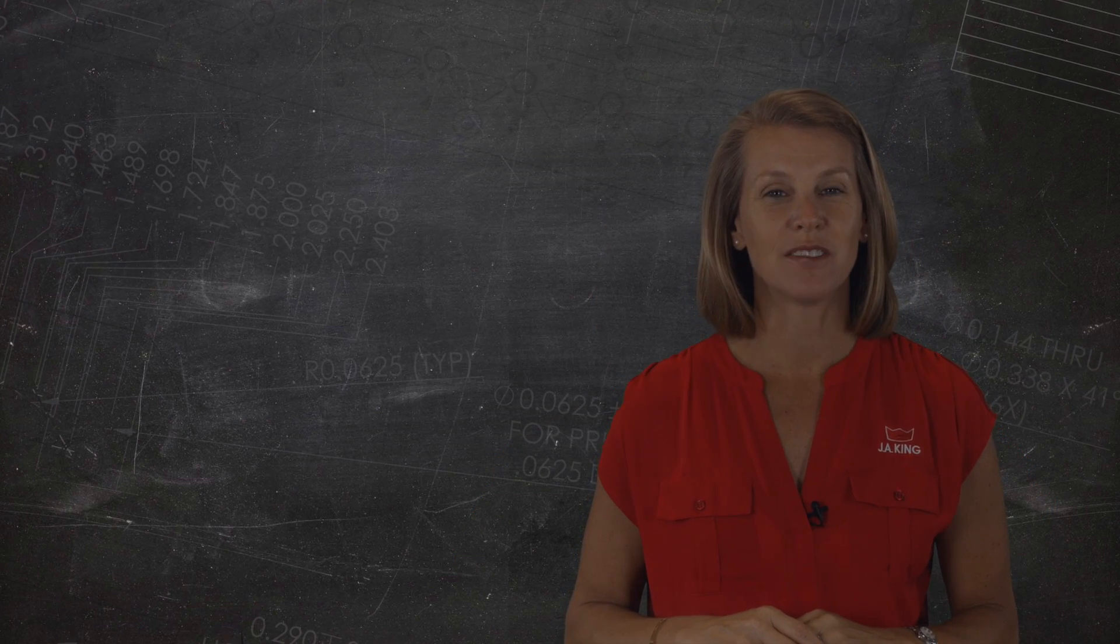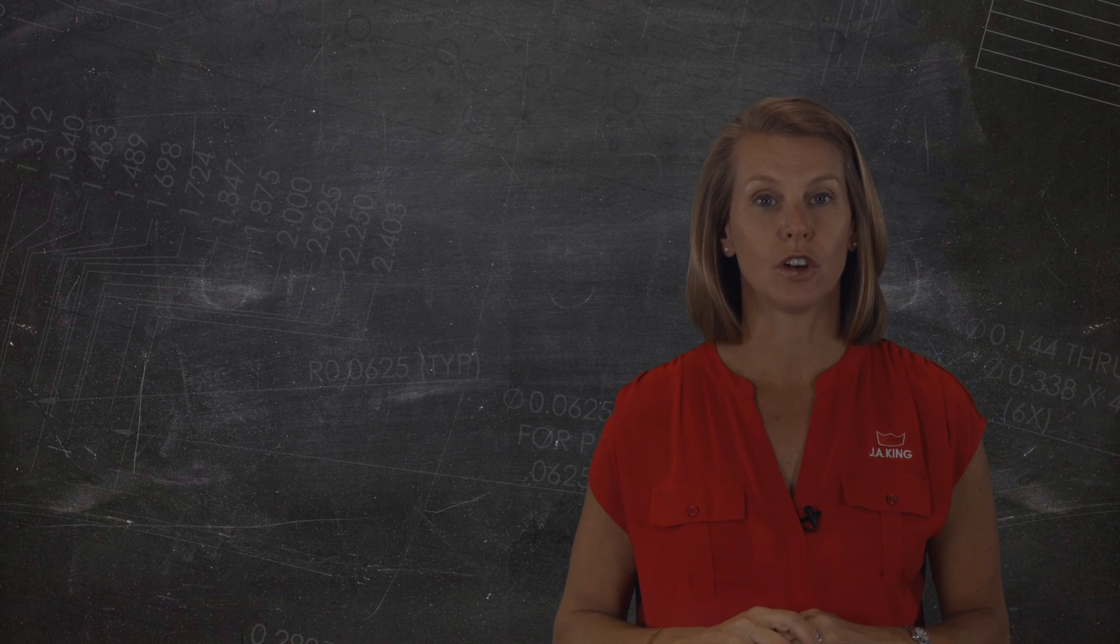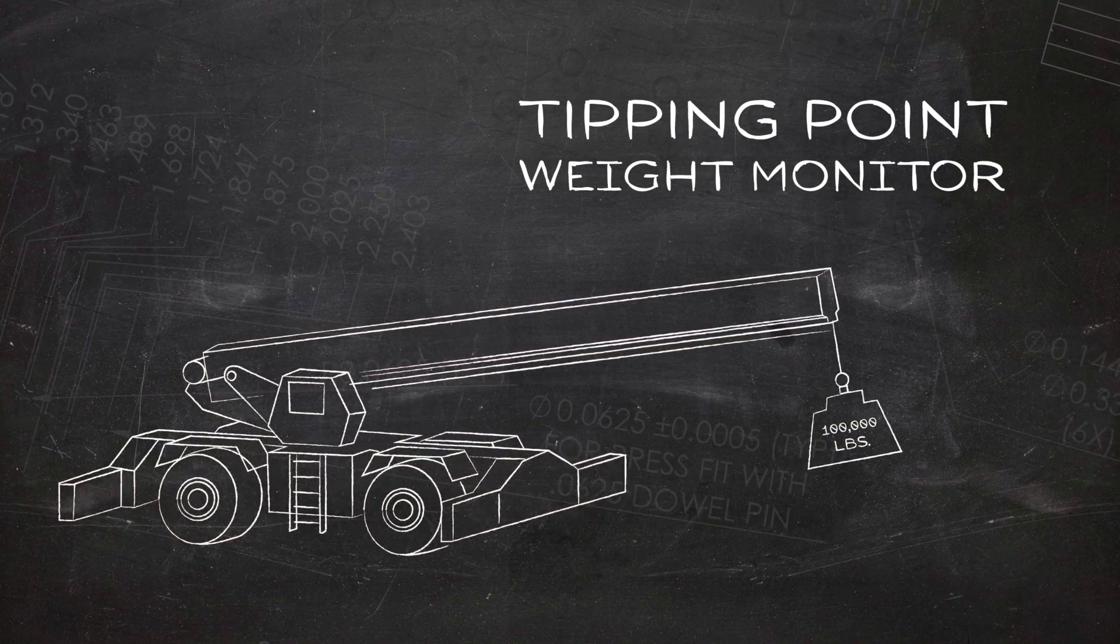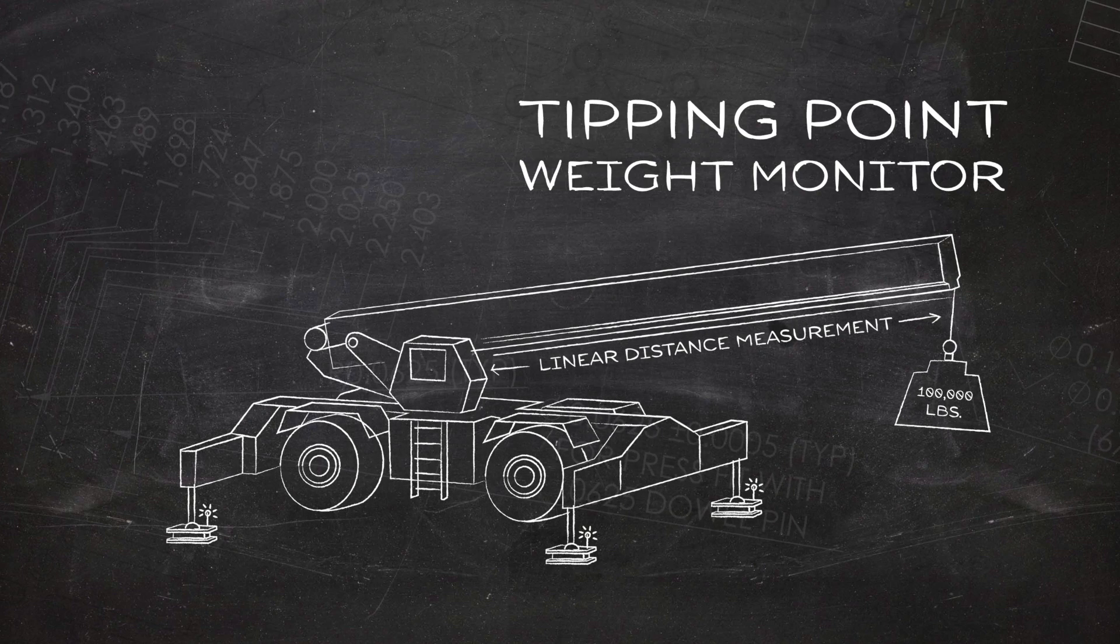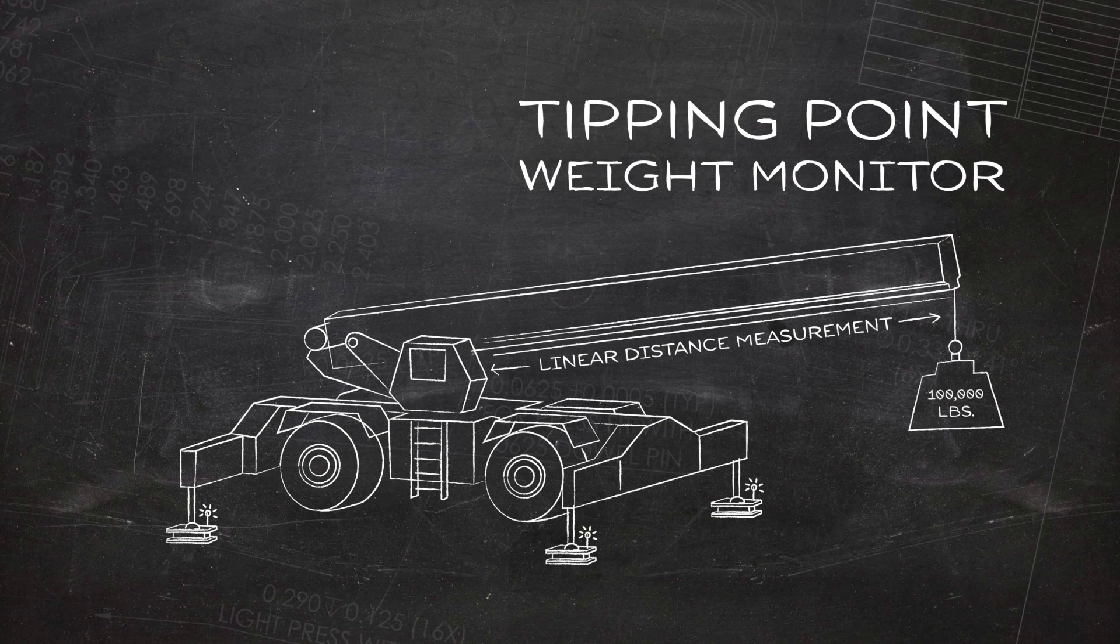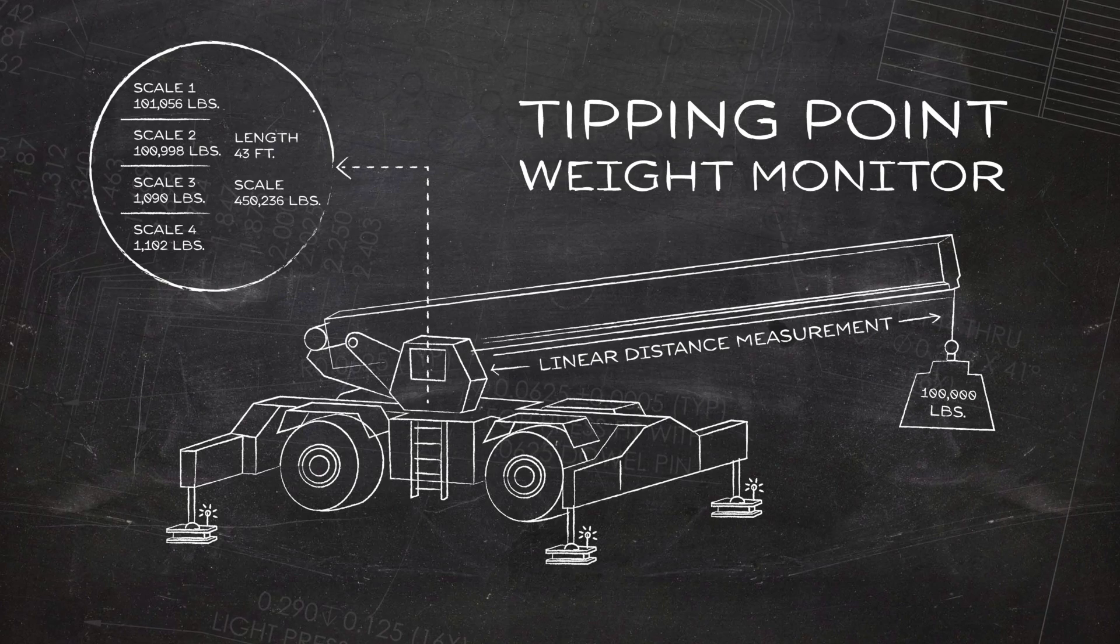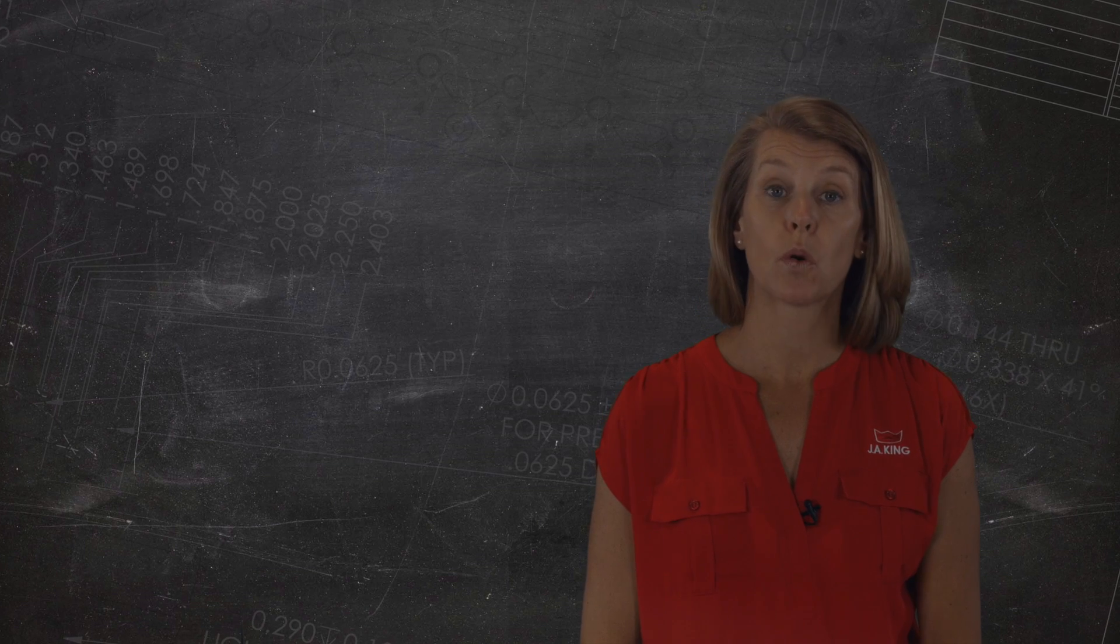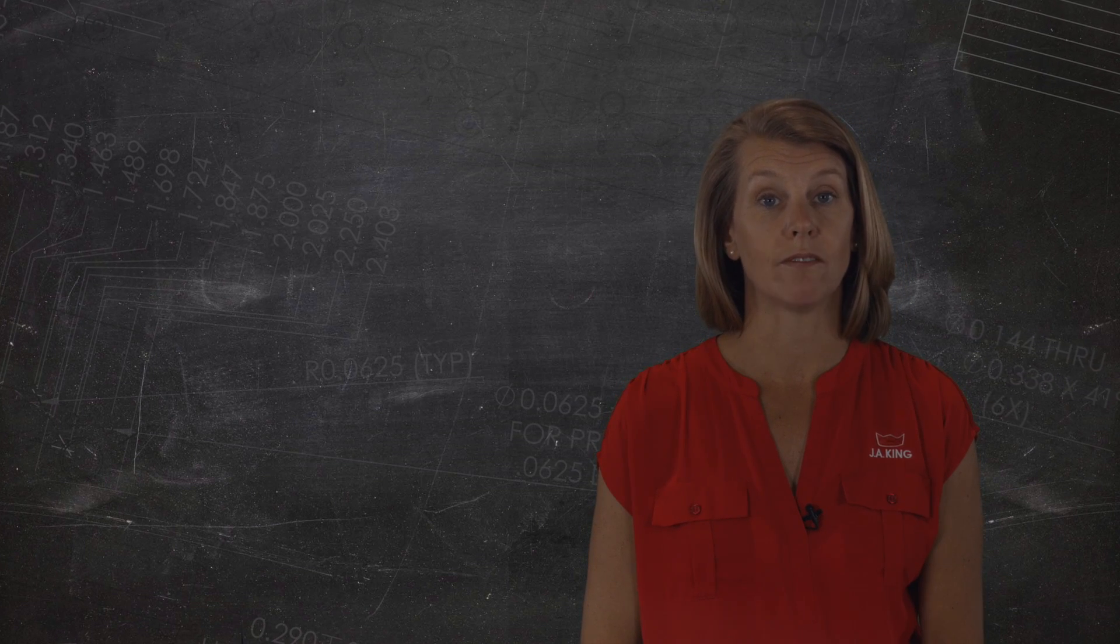Speaking of center of gravity, a large crane manufacturer needed a way to measure the tipping point on their new machines when the outriggers were extended. J.A. King designed four custom-made weigh modules with a total capacity of just under a million pounds. The data was transmitted wirelessly to the operator in the cab, saving time, manpower, and most importantly, ensuring the safety of everyone involved.